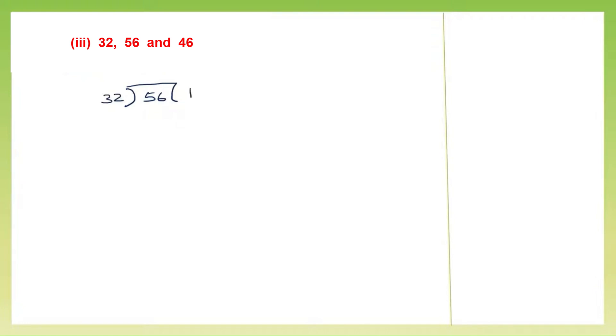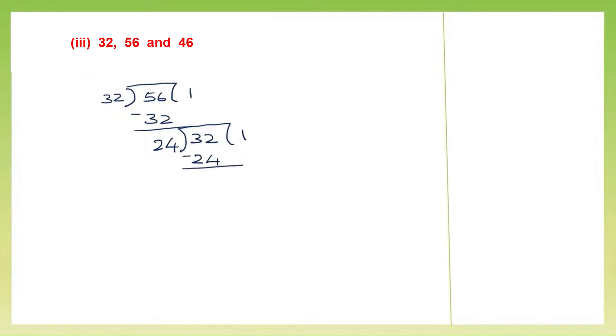Question 3: 32, 56 and 46. We have 3 numbers, so let's take the first 2 numbers. We'll put 56 inside and take 32 out and divide. 32 ones are 32, minus; 6 minus 2 is 4, 5 minus 3 is 2. So I have 24. Now I'm going to continue my division — let me put 32 inside. 24 ones are 24, minus; here we need to borrow, so this becomes 2 and this is 12. 12 minus 4 is 8.